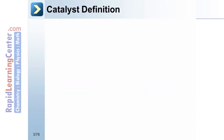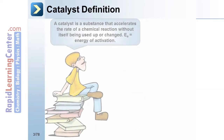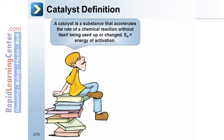Catalyst definition: A catalyst is a substance that accelerates the rate of a chemical reaction without itself being used up or changed.